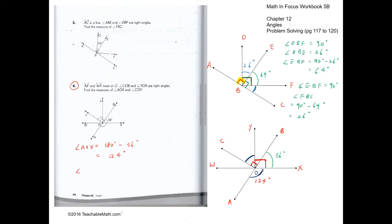Next we have to find angle COY. To find COY, first we find angle YOB, which is 90 minus 66, giving 34 degrees. Then to find angle COY, we use 90 minus 34 degrees, which gives us back 56 degrees.